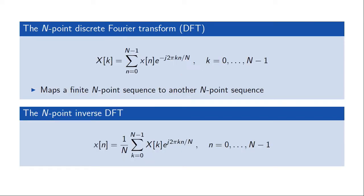The discrete Fourier transform takes a set of N numbers, possibly complex values, and maps them into another sequence of N values with a formula which looks very similar to the discrete time Fourier transform. One can show that this transform is also unique, meaning we have an inverse transform. The inverse is given by a similar sum with a change in the sign of the exponential, or conjugation, over the transform coefficients, normalized by 1 over N.